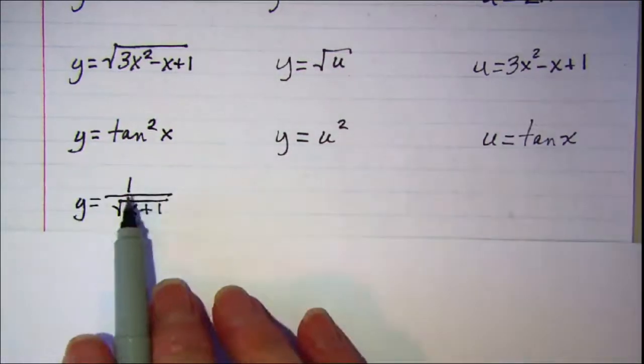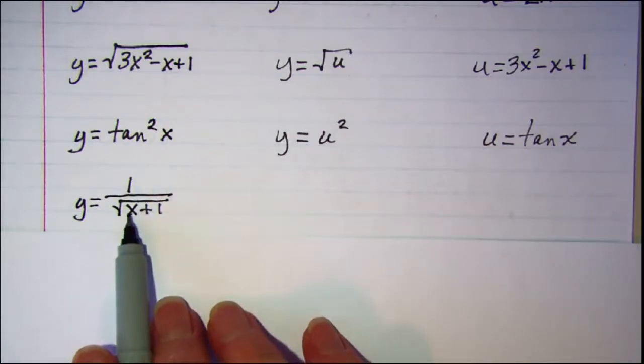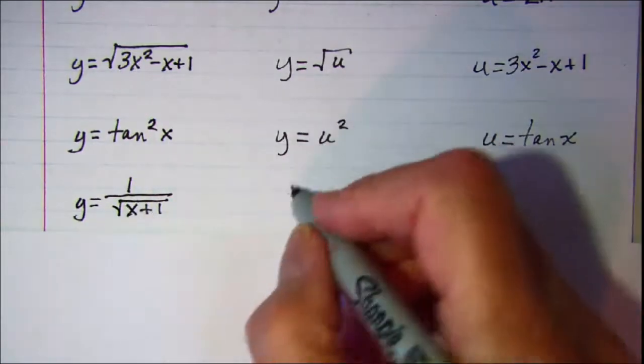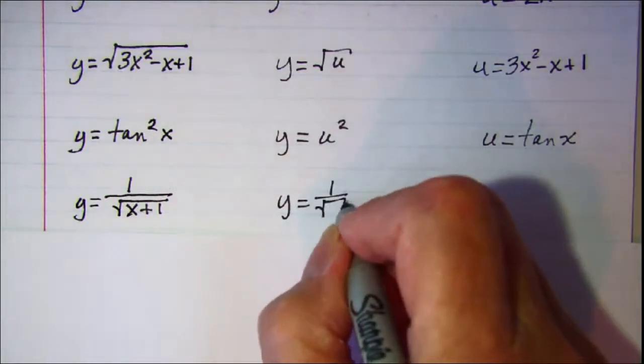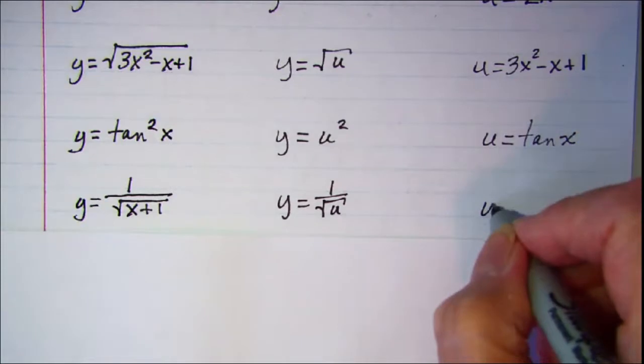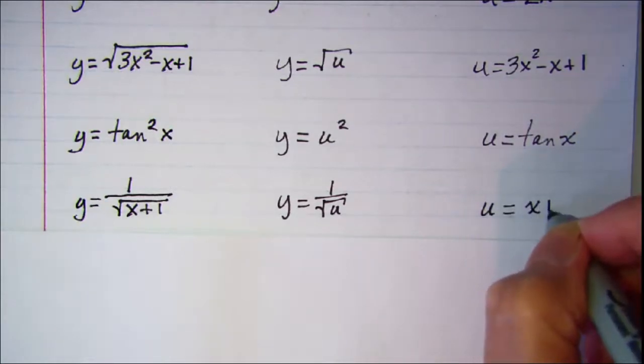For this one we have one over the square root of something, so y equals one over the square root of u, and u is equal to x plus one.